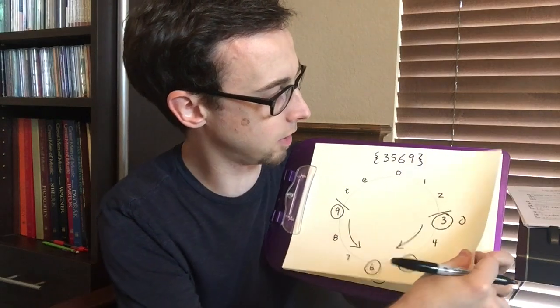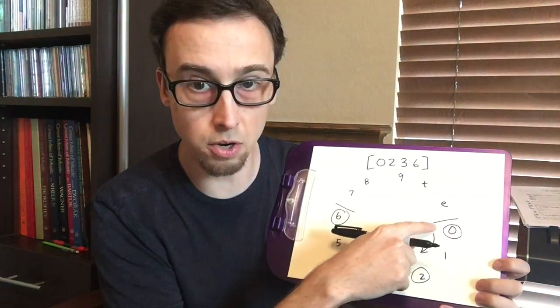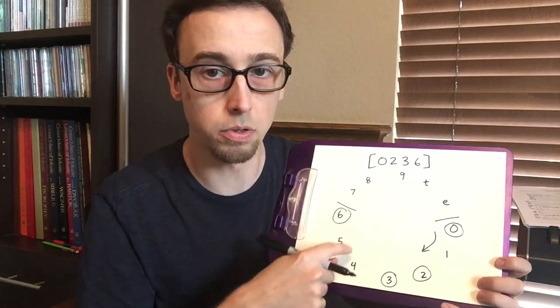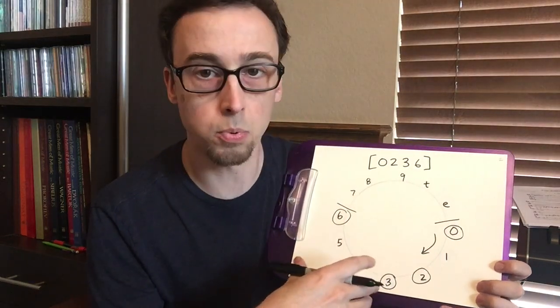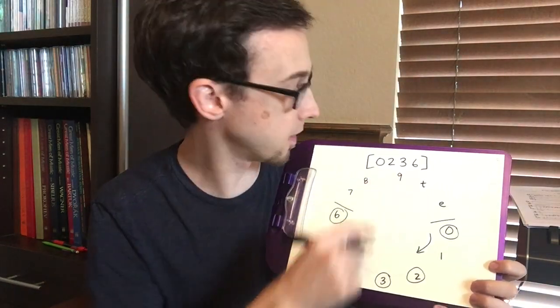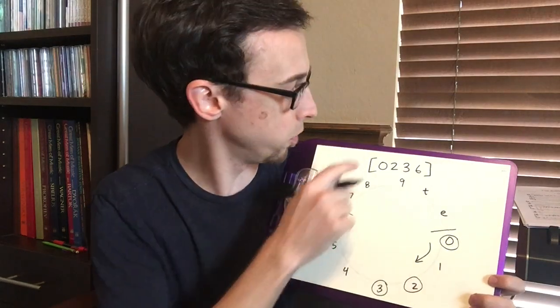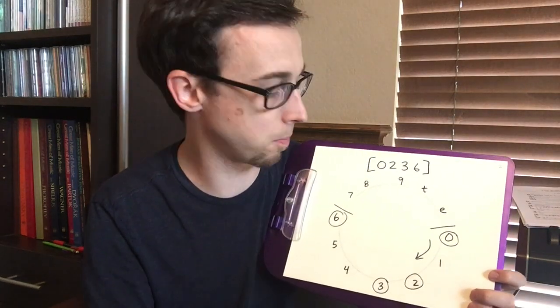When we do that, we can see we've turned that three to a zero, and then we're going zero, one, two, three, four, five, six. That is giving us our prime form which is 0236. Notice with prime form, we're using the Clendiddy Marvin textbook, we use these squared brackets to show our prime form.